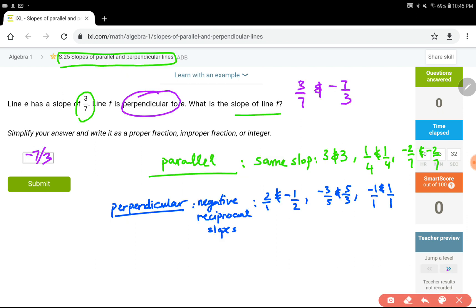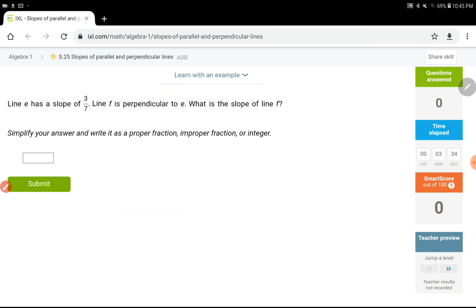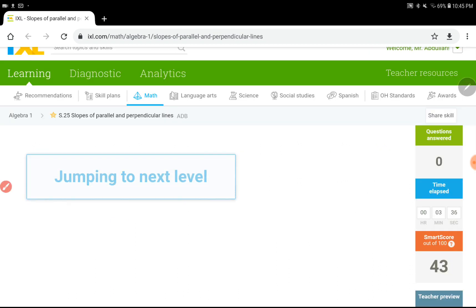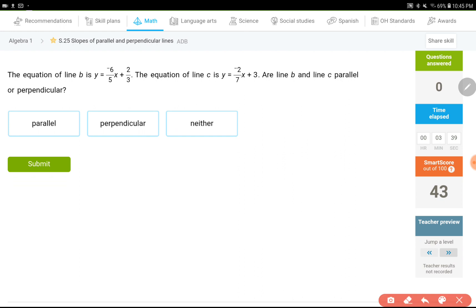Moving on to the next level. Let's see what kind of questions we are going to get, if it's going to get any harder or if it's going to be the same. Okay, the equation of line D is this, and the equation of line C is that one right here.